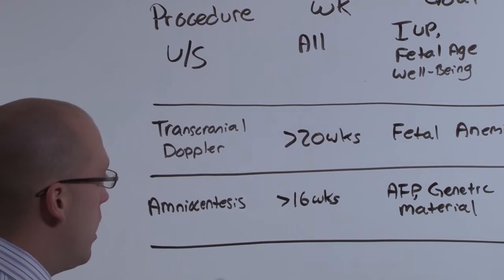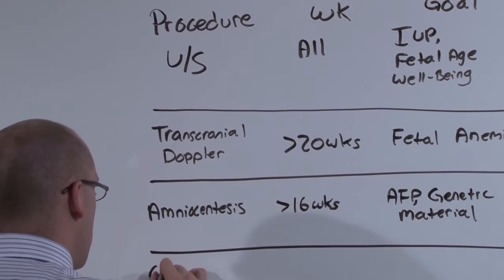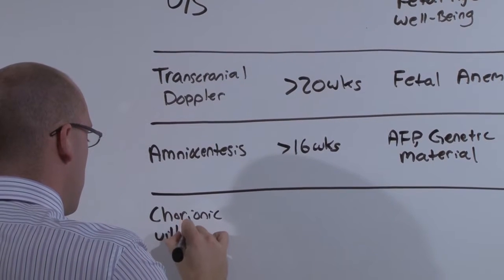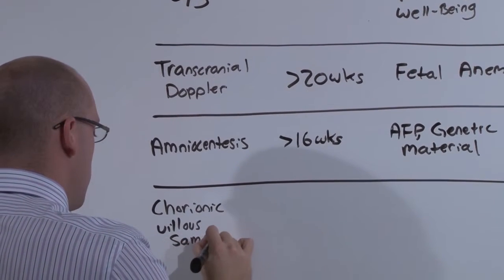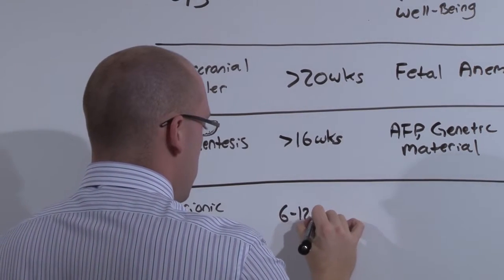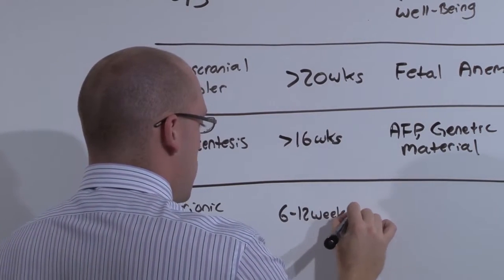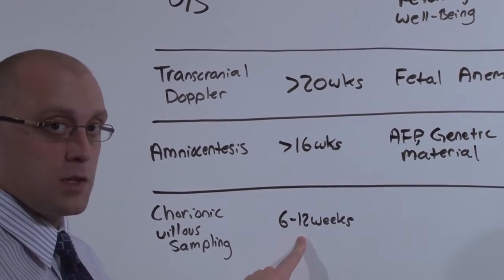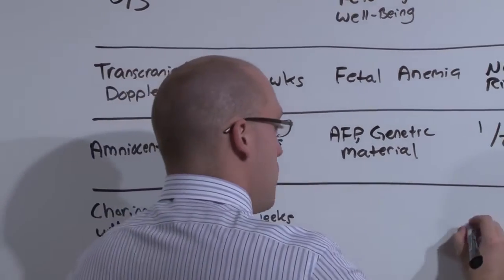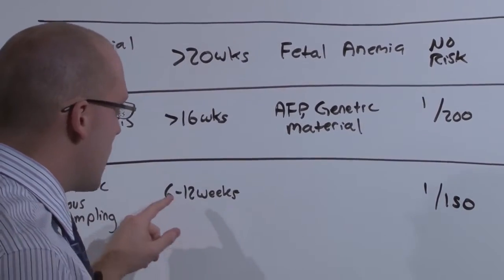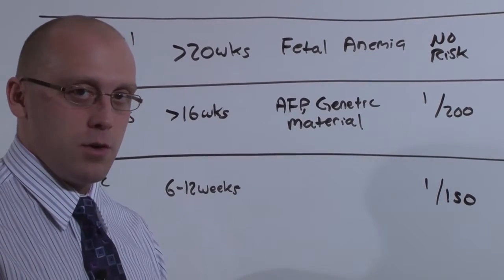So patients who are very high risk will elect to do a chorionic villus sampling. This can be done at 6 to 12 weeks. And you can imagine that if you're putting a needle into baby this early in development, the risk of loss is very high. And it's higher than amniocentesis, it's about 1 in 150.